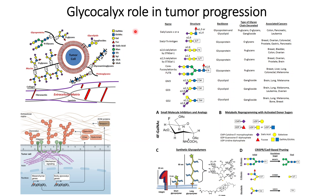Today we will discuss the role of post-translational modification in tumor progression — how disruption in post-translational modification in tumor cells helps drive tumors towards metastasis. Our focus will be on the glycocalyx, and the different kinds of glycan structures produced in tumor cells because of reprogramming that has occurred within those cells.